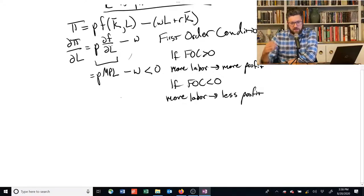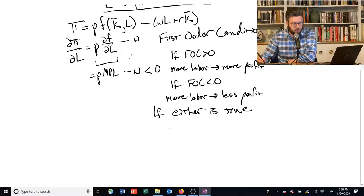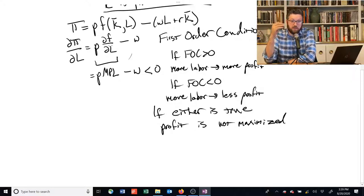So in both cases, we can't actually be at the profit maximizing point yet. If either of these is true, profit is not being maximized. Why is that the case? Because if profit was actually at the maximum possible level, there would be no way to increase it further. And these conditions are telling us that, well, actually, if you hire more labor, you get more profit if you're in this first condition up here.